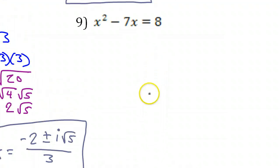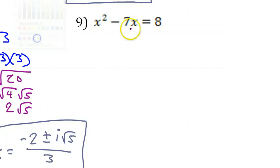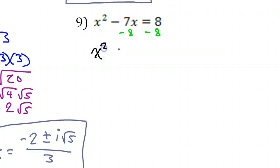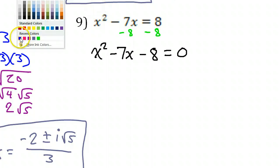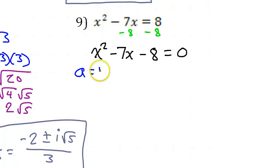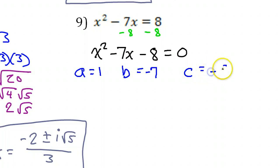Let's do number 9 — this will probably be the last problem on this video. We don't have 0 on one side, so let's subtract 8 from both sides. That gives us x squared minus 7x minus 8 equals 0. A is 1, B is negative 7, and C is negative 8.